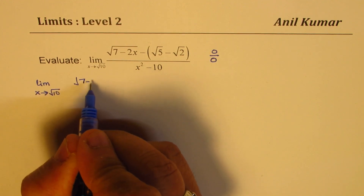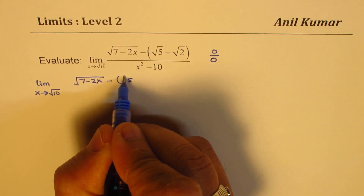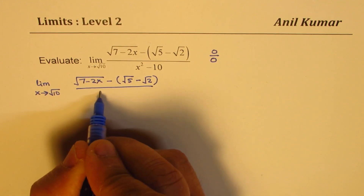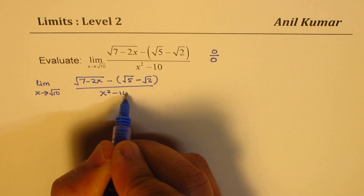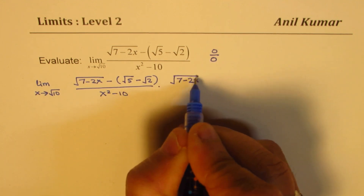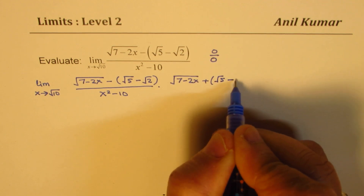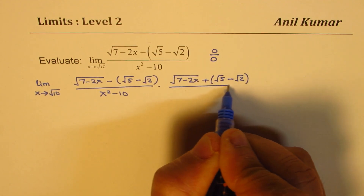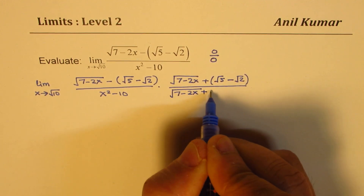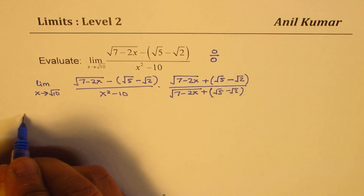Let's rationalize and figure this out. We have to find the limit when x approaches square root of 10 of square root of 7 minus 2x, minus square root of 5 minus square root of 2, over x squared minus 10. We'll multiply and divide by square root of 7 minus 2x plus square root of 5 minus square root of 2.